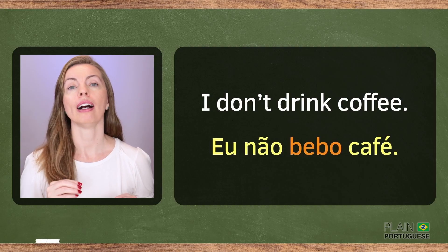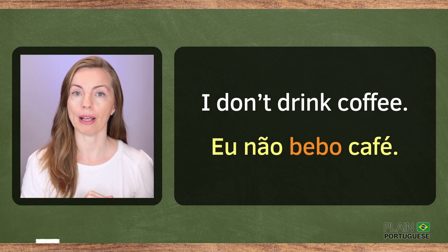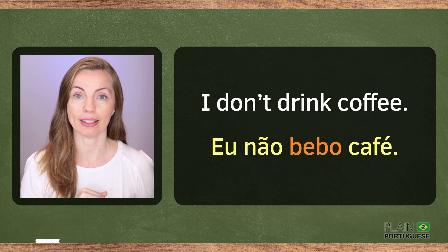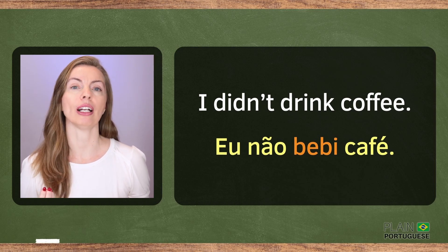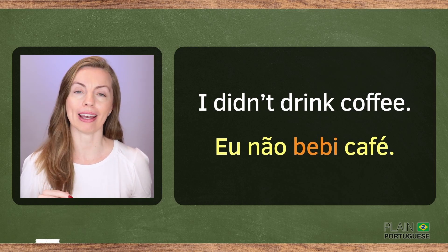A clear distinction between English and Portuguese is the absence of auxiliary verbs in Portuguese. In Portuguese, we conjugate verbs in order to convey different verb tenses. For example: 'I don't drink coffee' — 'Eu não bebo café' in the present tense. 'I didn't drink coffee' — 'Eu não bebi café' in the past tense.